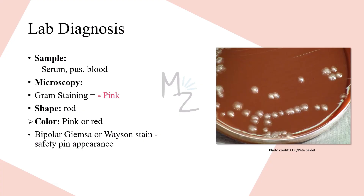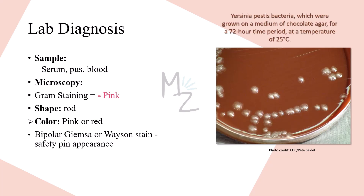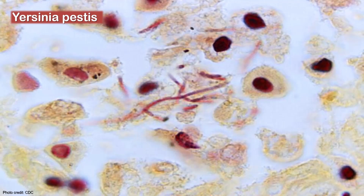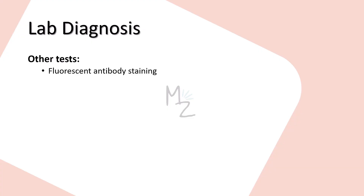Lab diagnosis: samples of serum, pus, and blood are needed. On gram staining, Yersinia pestis appears gram-negative and rod-shaped. Bipolar Giemsa or Wayson stain reveals the typical safety pin appearance better than gram stain. Yersinia pestis is grown on chocolate agar for 72 hours at 25 degrees Celsius — its colonies are succulent. Additional tests include fluorescent antibody staining to identify Yersinia pestis in tissues, and a rise in antibody titer to the envelope antigen, which can be useful retrospectively.